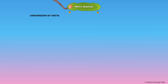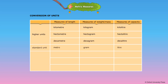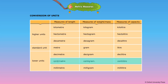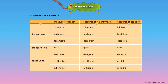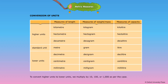Conversion of Units. As we move up the table, each unit is ten times the previous unit. As we move down the table, each unit is one-tenth of the previous unit. To convert higher units to lower units, we multiply by ten, hundred, or thousand as per the case.